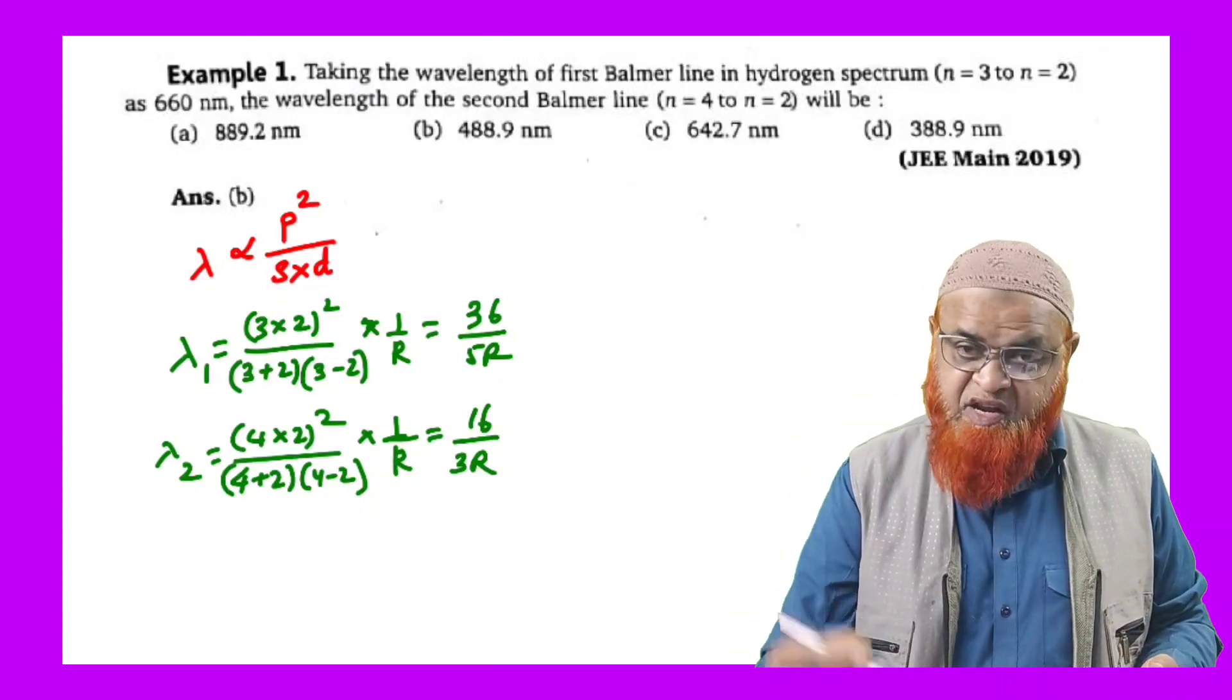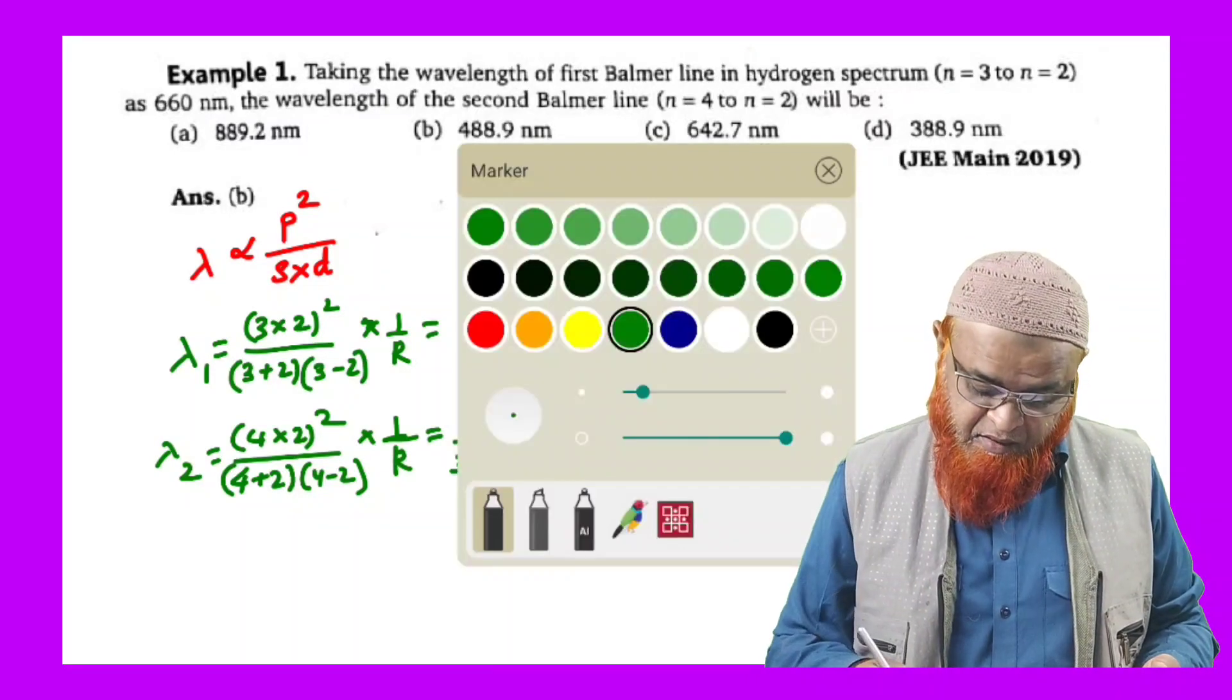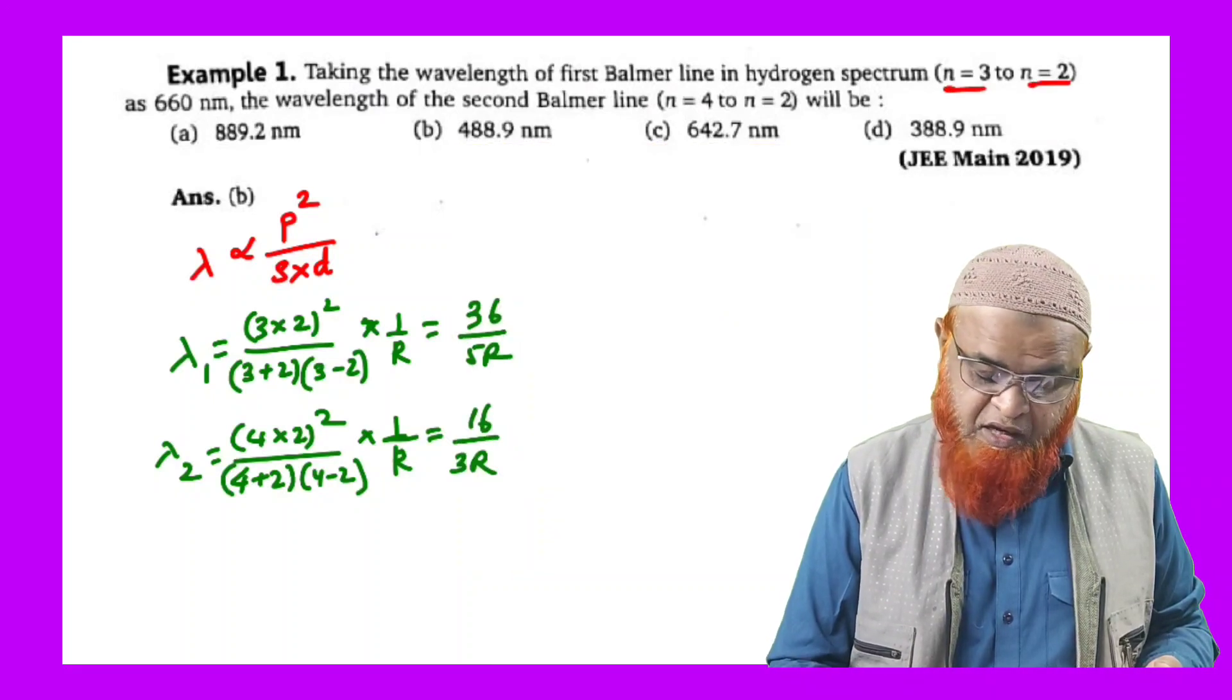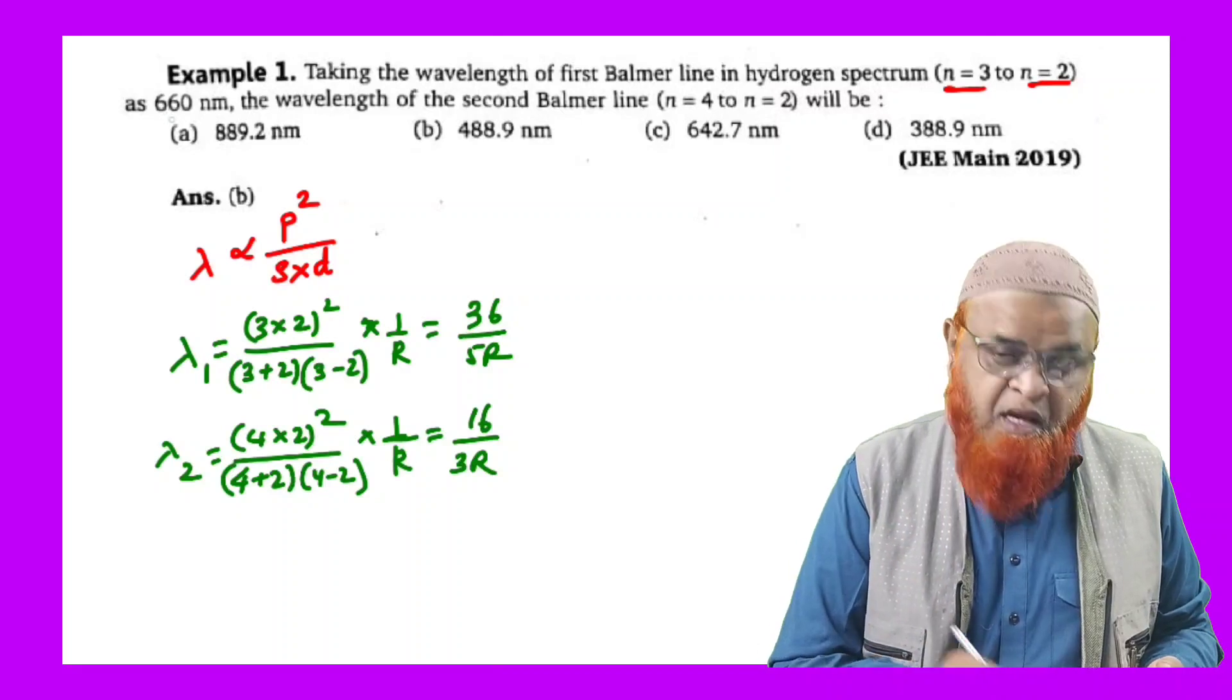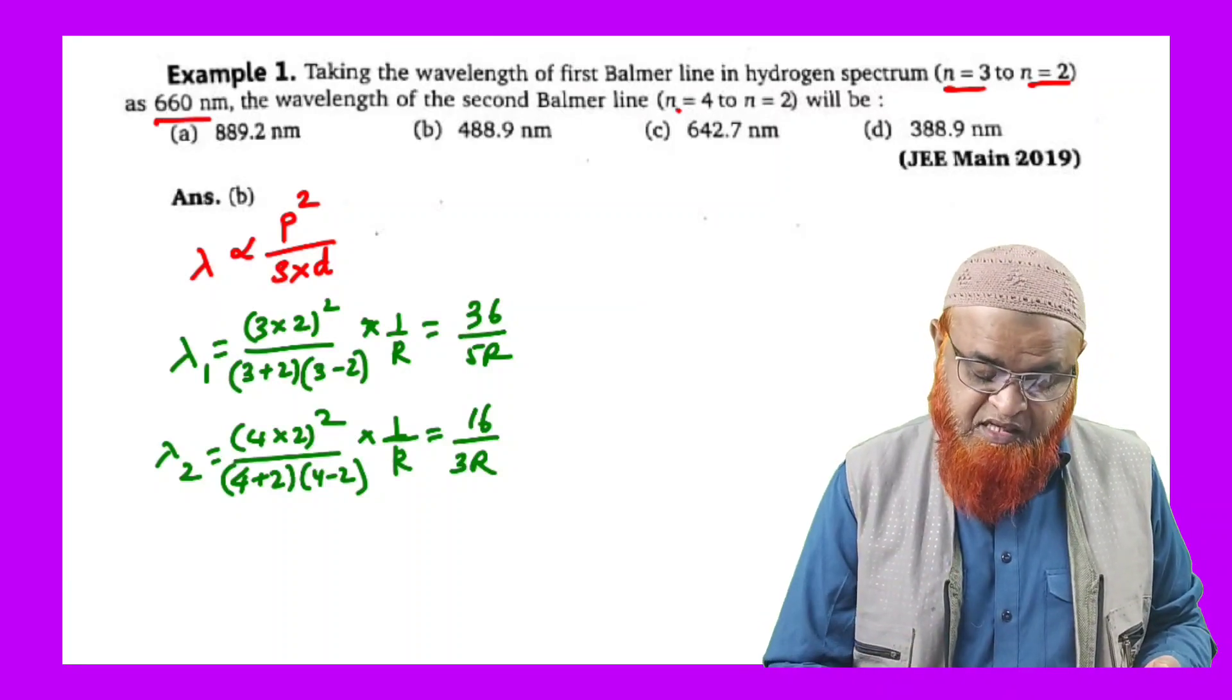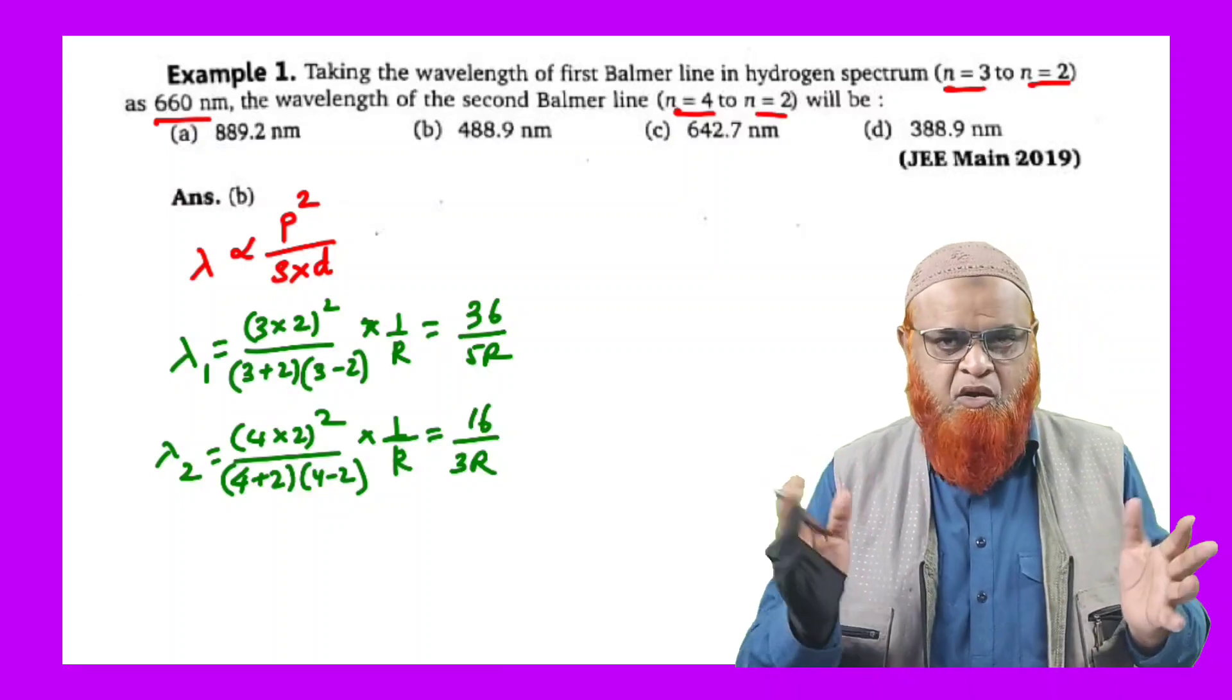The transitions are given, which I am underlining here with red color. What is given here? So n equal to 3 and n equal to 2 for the first wavelength where the wavelength is given as 660 nanometers. And for Balmer series if you consider, it is n equal to 4 and n equal to 2.